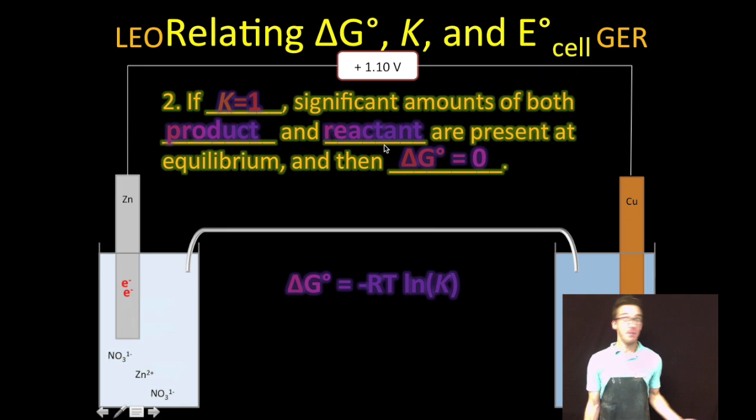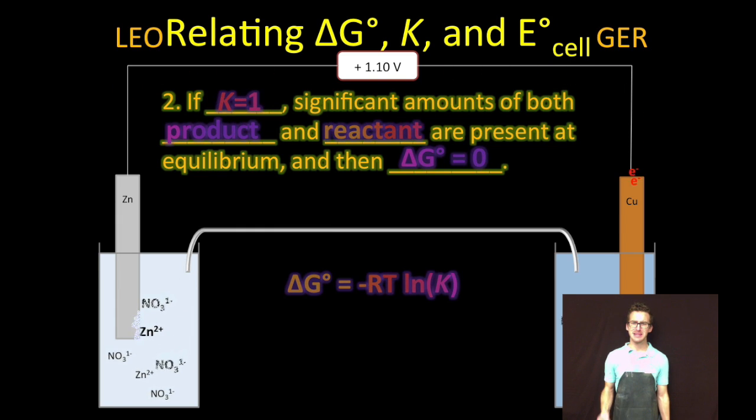Alright, let's talk about math. If K is equal to 1, that means there are significant amounts of both product and reactant present at equilibrium. But if you take the natural log of 1, you get 0. And anything times 0 is 0. So if K is equal to 1, delta G will be equal to 0.